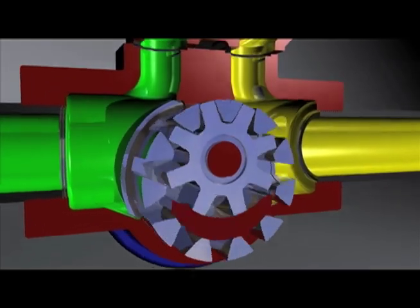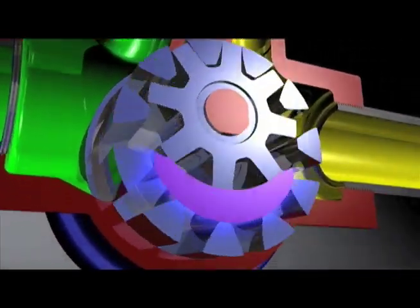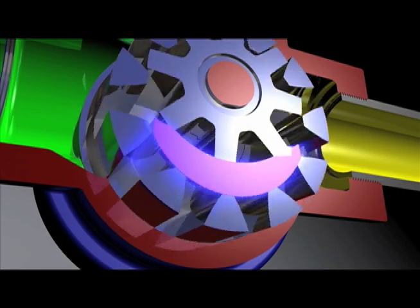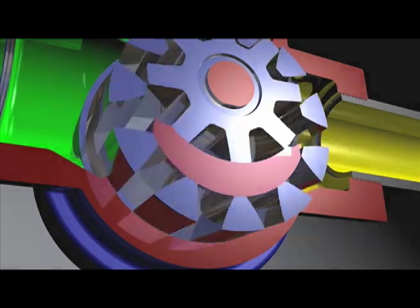As the rotor and idler rotate, the fluid is prevented from returning to the suction side by the crescent located on the head of the pump, which seals the area where the teeth are out of mesh.